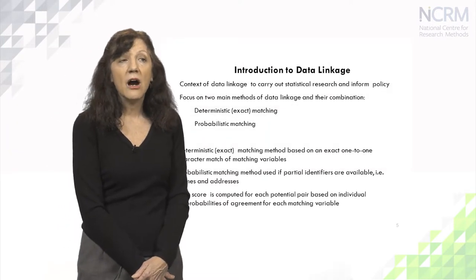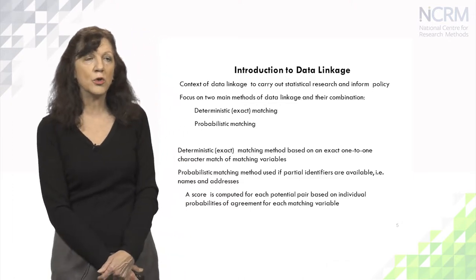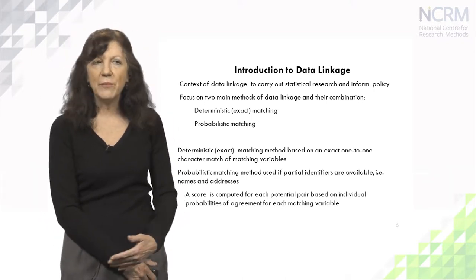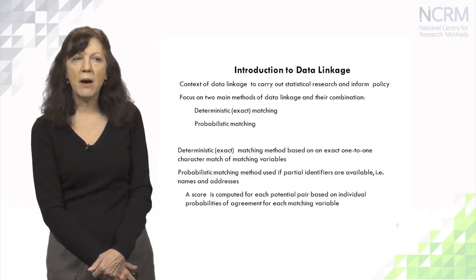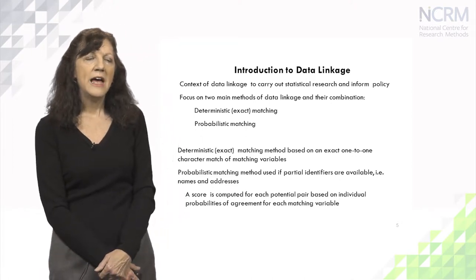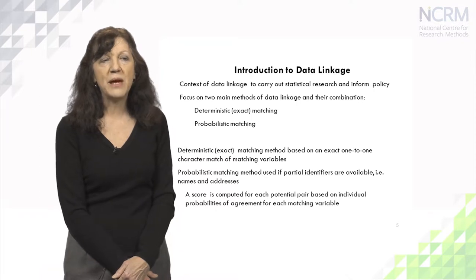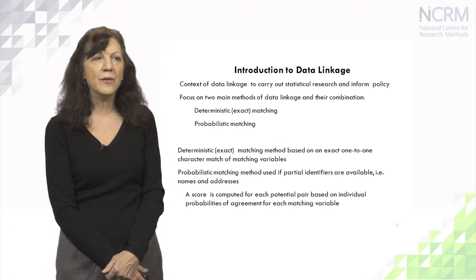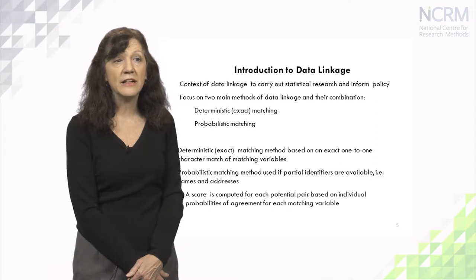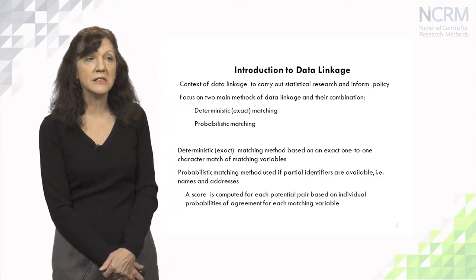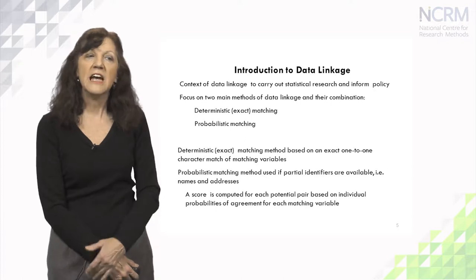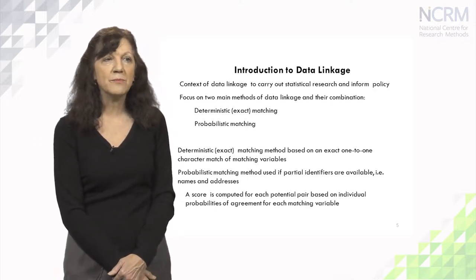We conduct data linkage to carry out statistical research and to inform policy. The two main methods of data linkage are deterministic exact matching and probabilistic matching, and their combination. In deterministic matching, this is based on exact one-to-one character matching of the matching variables. In probabilistic matching, these are based on partial identifiers such as names and addresses, and a score is computed for each potential pair based on the individual probabilities of agreement for each matching variable.